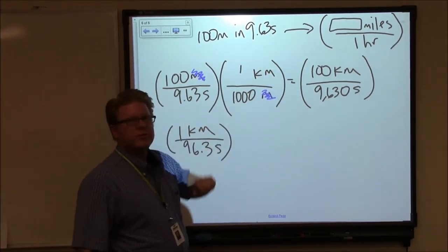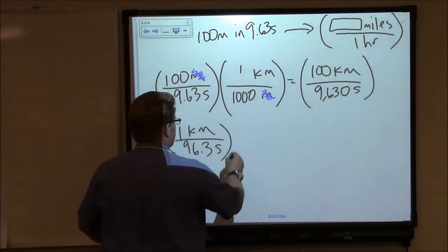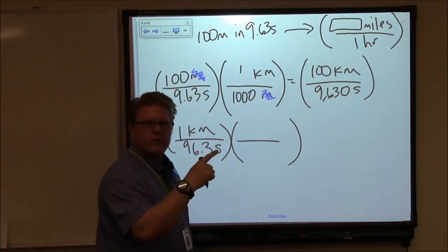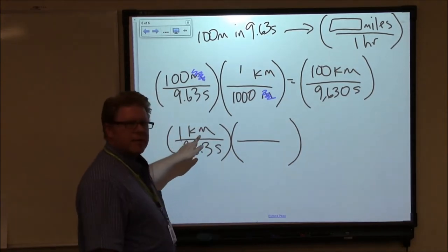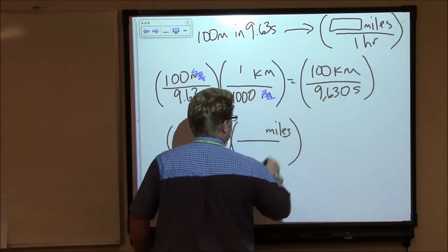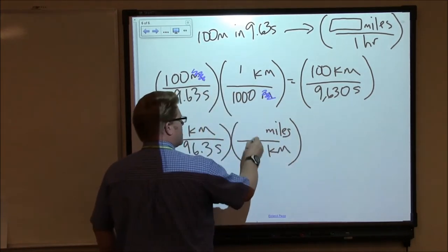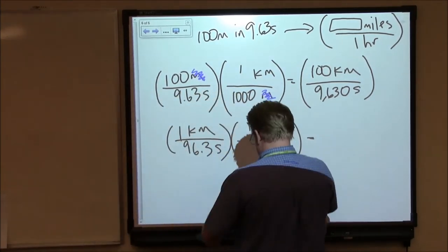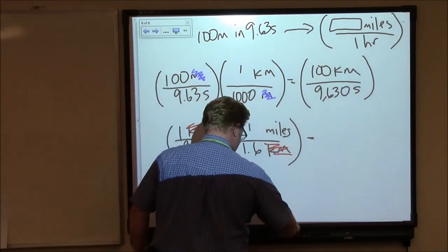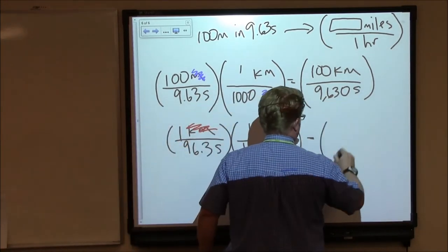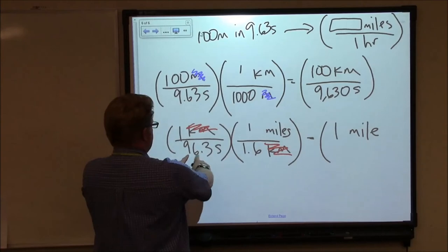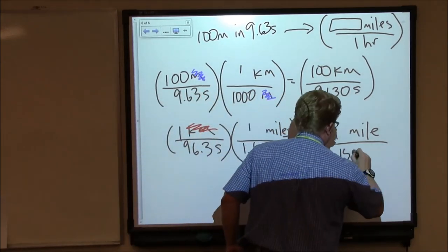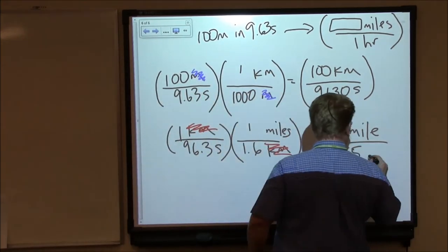We want to go from kilometers to miles. So now we can bring in that ratio that we used a moment ago, 1.6 kilometers to the mile. I've got kilometers on top. I want to replace it with miles. So I'll put miles on top, put kilometers on the bottom, and that ratio is 1 to 1.6. So now I can cancel my units. That's 1 mile. 96.3 times 1.6, that works out to 155 seconds.